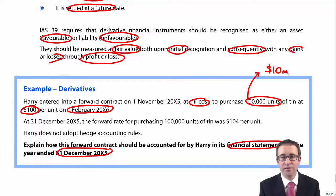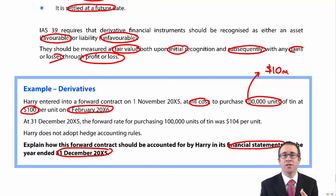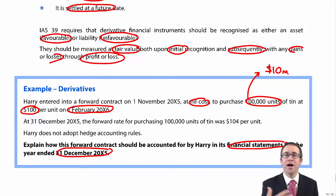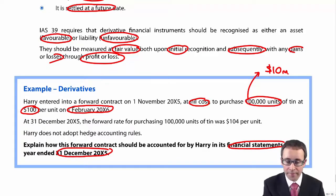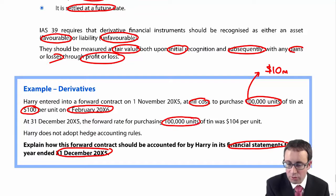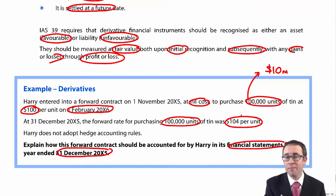Since it is a derivative, we measure it initially at fair value. Initially it costs zero, so we show nothing in the financial statements at inception — though we would make a disclosure under IFRS 7. However, we then need to fair value it at the reporting date, and any gains or losses go to profit or loss. At the end of the year, we have 100,000 units of tin to buy, but the market rate is now $104 per unit.